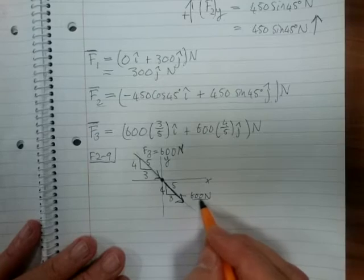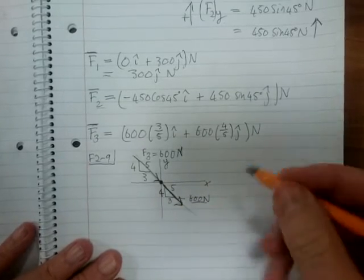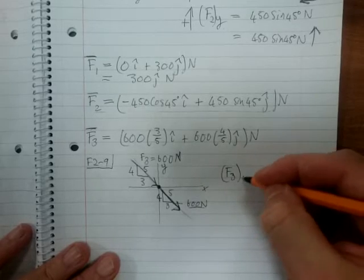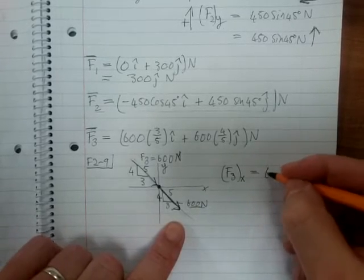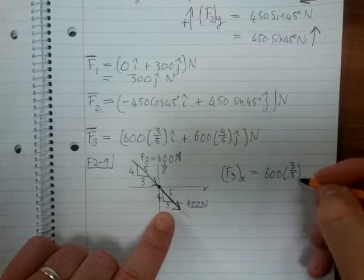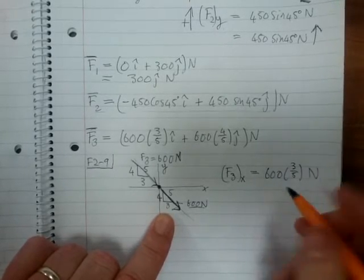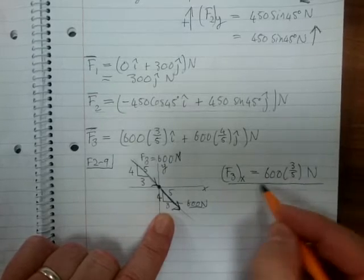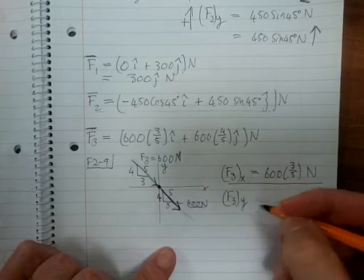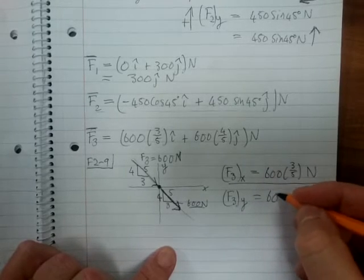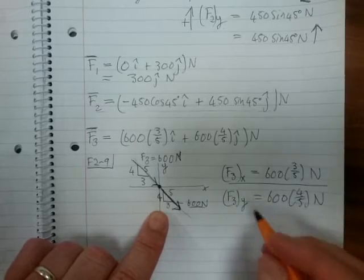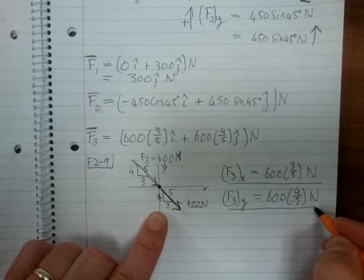So the magnitude is 600 Newton, that's the magnitude, and then this gives the direction. So if we say F3X is then equal to 600 times 3 over 5 Newton—that's scalar form. F3 in the Y is 600 times 4 over 5 Newton scalar form.